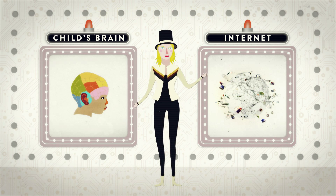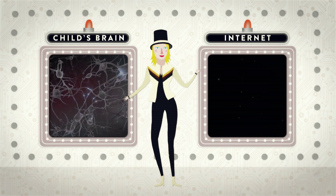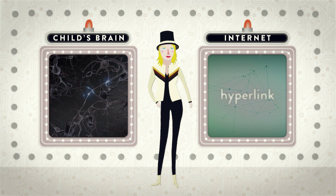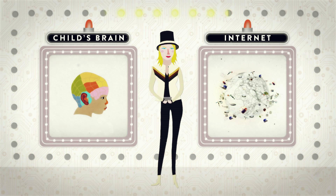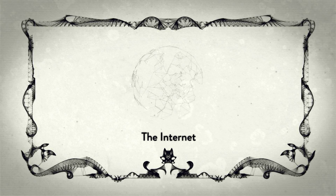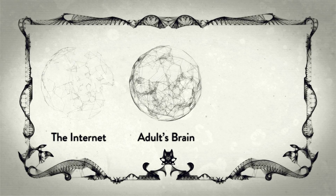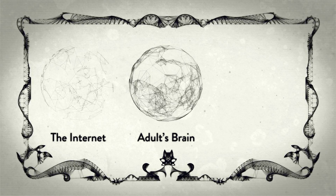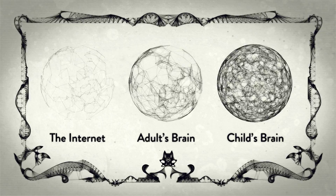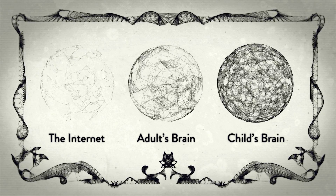So then, which of these networks is more complex? We could say a synapse in the brain — the connection point between two neurons — is like a hyperlink, the connection point between two web pages. The internet has over a hundred trillion links. An adult's brain has 300 trillion links. But get this: a child's brain has a quadrillion connections — ten times the number of connections of the entire internet. A child's brain has more connections than the entire internet.